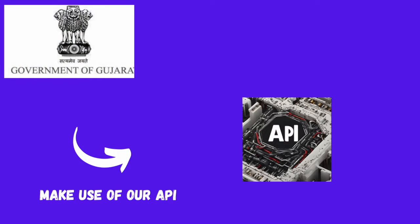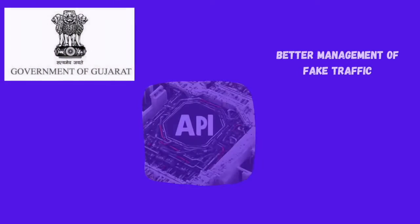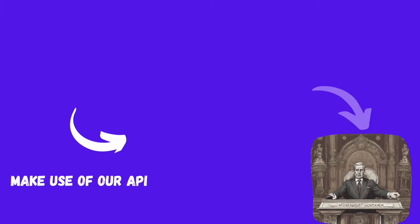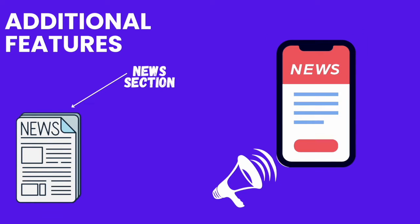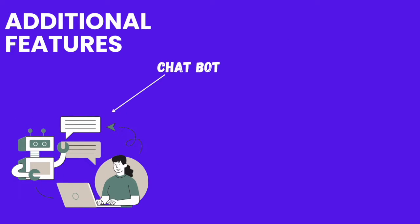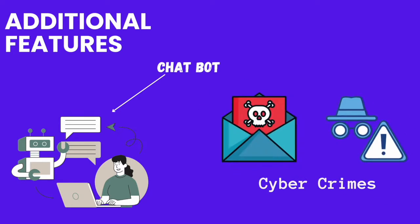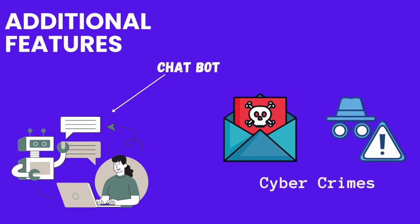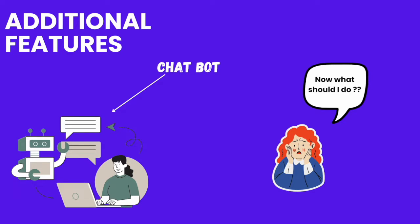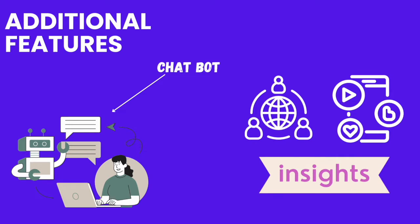This will help the government to manage accounts in a more efficient way. We will also have an API ready for enabling the government to easily access and manage fake accounts. We will also provide a news section where the user can stay updated with all current news about fake social media profiles and the harm they cause. Finally, we also have a chatbot feature explicitly trained to answer all questions related to social media awareness and cybercrime. If a user receives a threatening or inappropriate message, they can ask the chatbot for the respective action that can be taken.